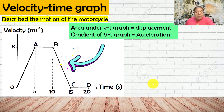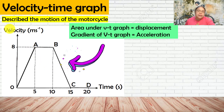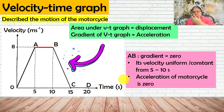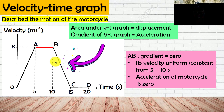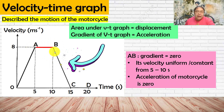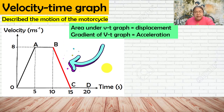For part A to B on the VT graph, the line is flat. We cannot say the object is at rest here — that would only apply to a displacement-time graph. Instead, the gradient equals zero, meaning velocity is constant from 5 to 10 seconds at 8 m/s. The acceleration of the motorcycle is zero because there is no gradient.